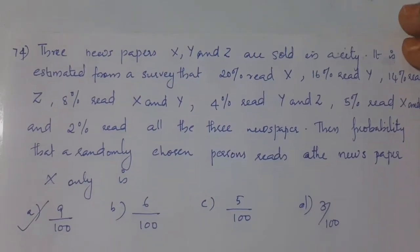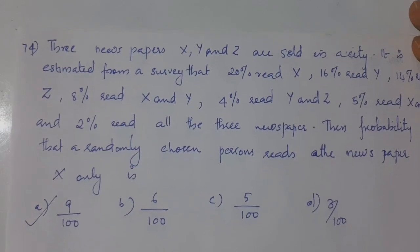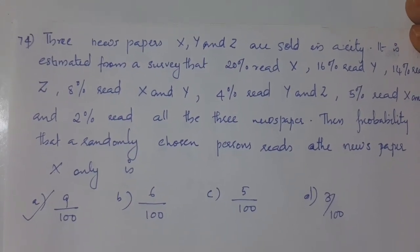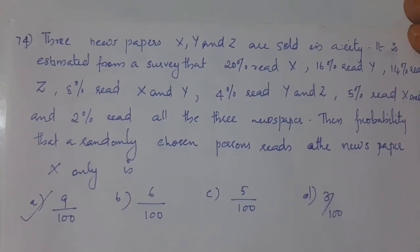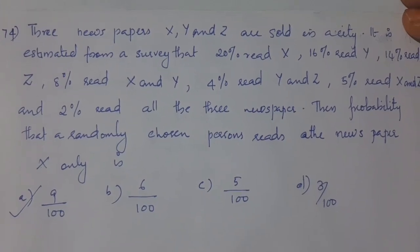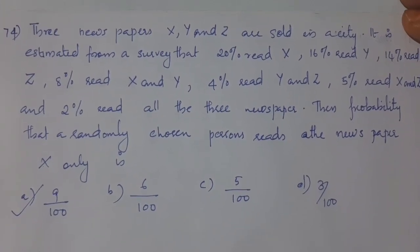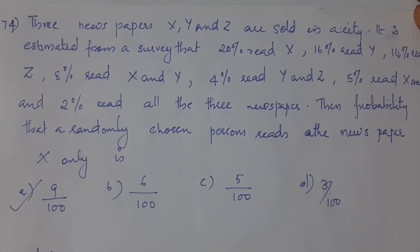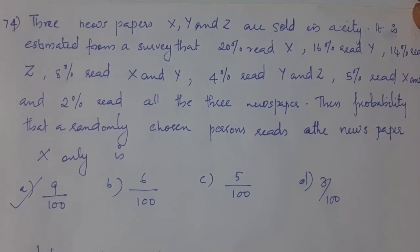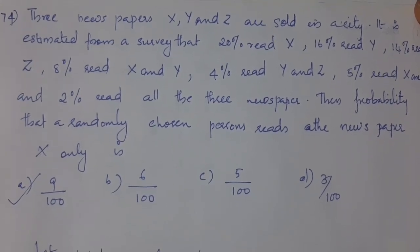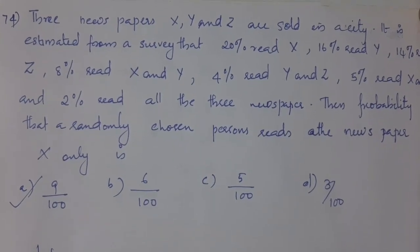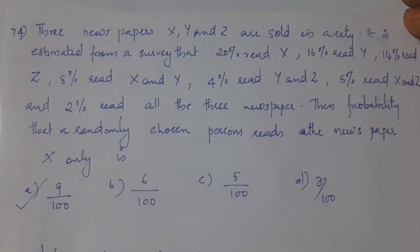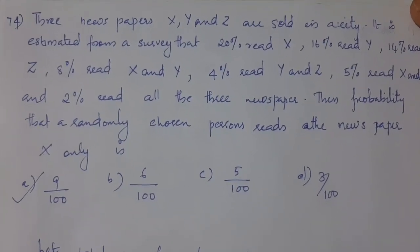First one: three newspapers X, Y, and Z are sold in a city. It is estimated from a survey that 20% read X, 16% read Y, 14% read Z, 8% read X and Y, 4% read Y and Z, 5% read X and Z, and 2% read all three newspapers.